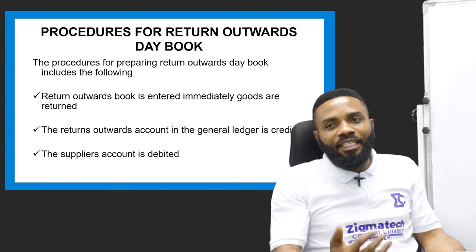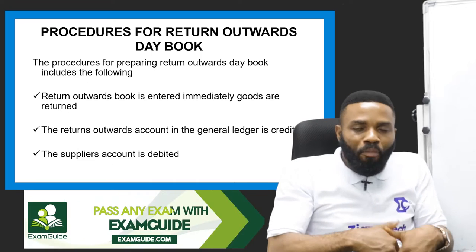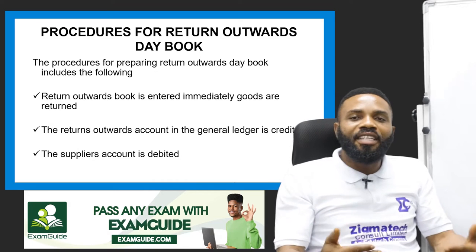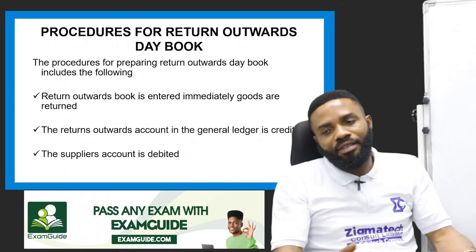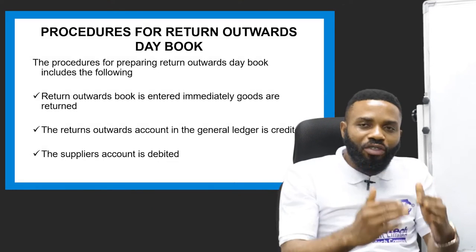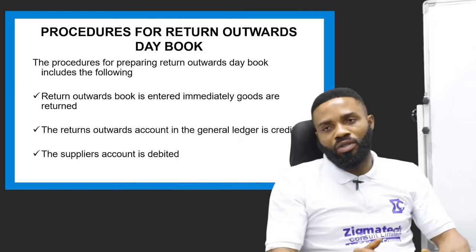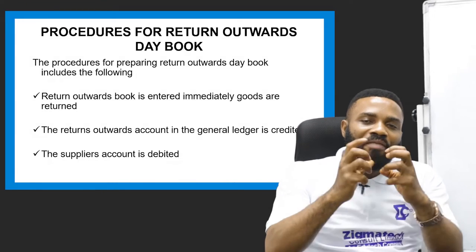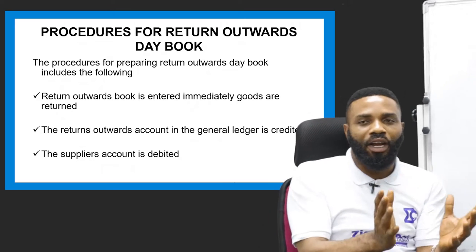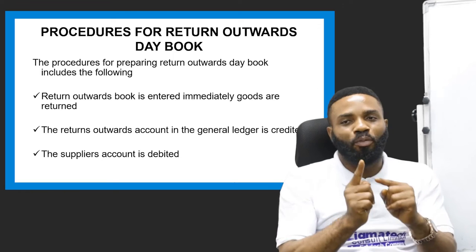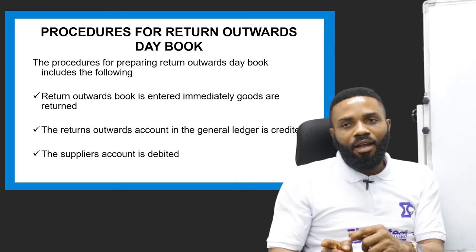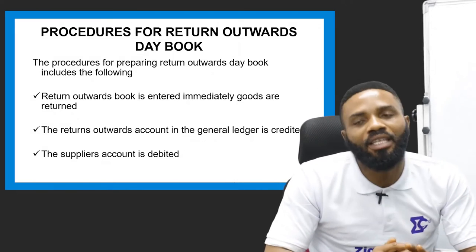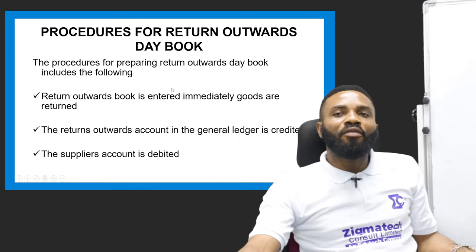Since we debit who receives and credit who gives, we debit the supplier and credit our company. The next question is: why do we need to keep an account for the supplier? The reason is because these items were bought on credit. We need to keep track of people who sold to us on credit. If we don't keep account of what we have returned, by the end of the day we may overpay or underpay.